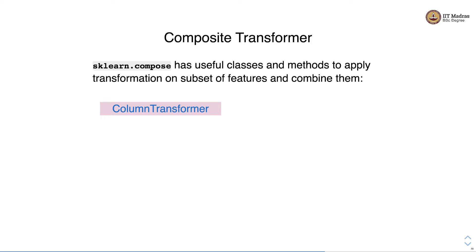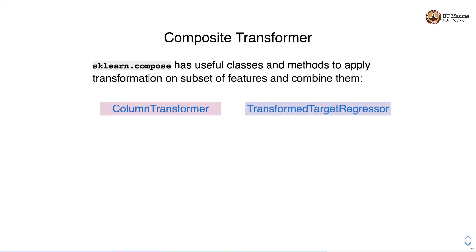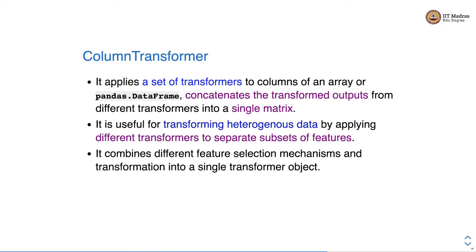The sklearn.compose module has useful classes and methods that we can apply on a subset of features and combine them. There are two classes we'll focus on: ColumnTransformer and TransformedTargetRegressor.